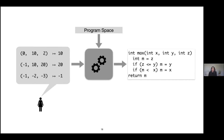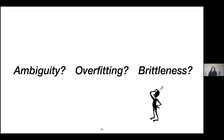Even though there are similarities, there are differences: in inductive program synthesis the examples are provided by a user and are a small handful, in contrast to the large training datasets common in inductive learning. Also, programs are far more structured, interpretable, and explainable than their counterparts in inductive learning. Despite these differences, inductive program synthesis inherits almost all the complications of inductive learning: ambiguity, overfitting, and brittleness.